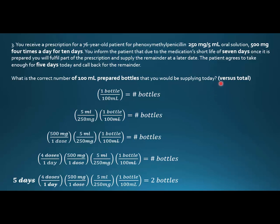Then I would also calculate versus total — not required on the test, but to check my work and confirm I have enough on shelf when the patient comes back. The total for 10 days: 10 times 4 is 40, times 2 is 80, times 5 is 400, over 100 makes 4 bottles. Or I could just say: 5 days gives 2 bottles, double that to 10 days gives 4 bottles.